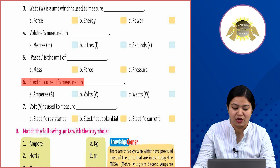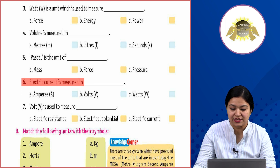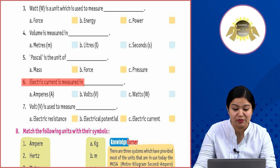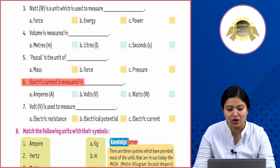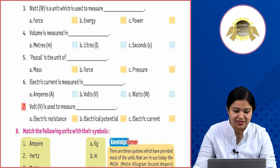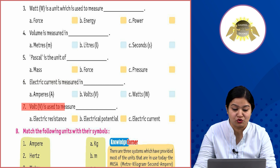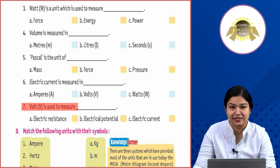Sixth: Electric current is measured in — option A: Amperes, option B: Volts, option C: Watts. Electric current ko hum kis cheez mein measure karte hain — usko measure kiya jaata hai option B, Volts mein.